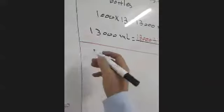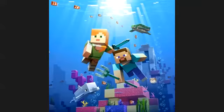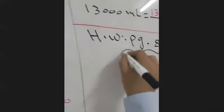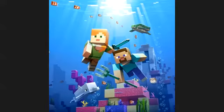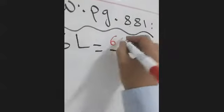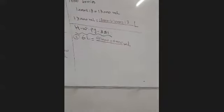Now let's head directly to the homework — page 881. Question one: 6 liters equals how many milliliters? To turn from liter to milliliter, we multiply by 1,000. So 6 multiplied by 1,000 equals 6,000 milliliters. Excellent — copy it quickly.